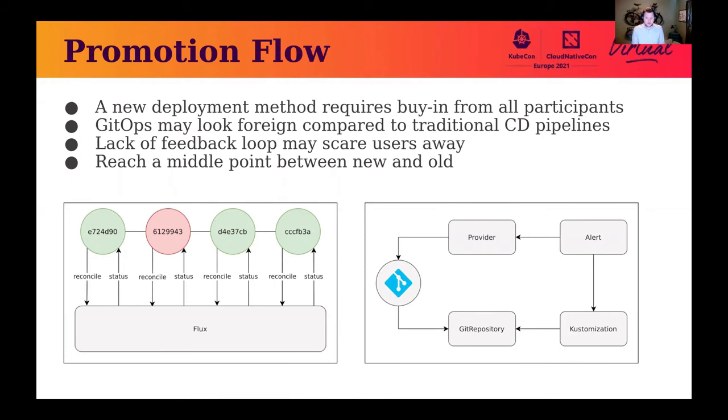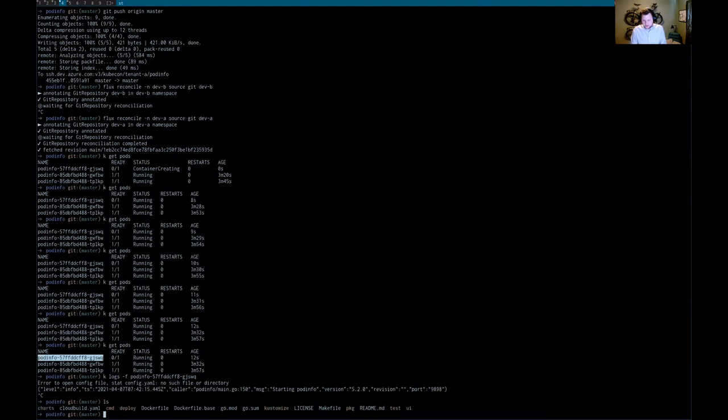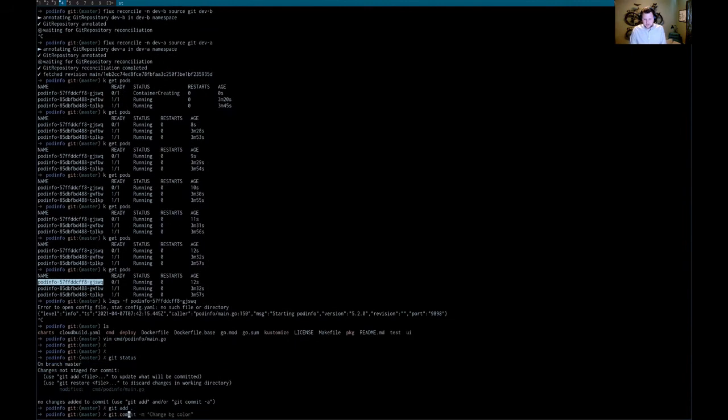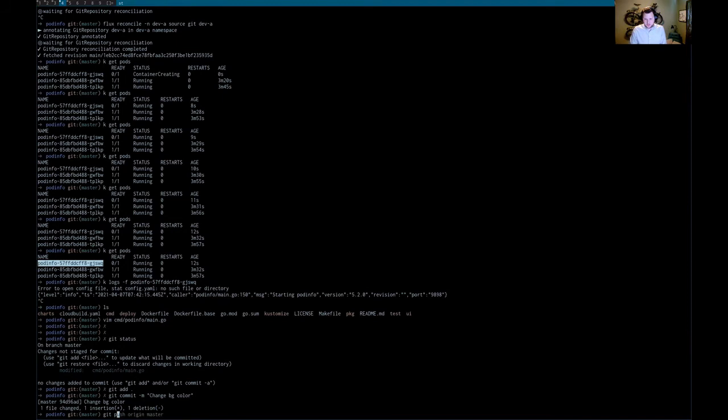In theory, what you can do is you can have a pipeline configuration that after a change to a dev manifest, it could take that change, create a PR to the QA manifest, and wait for the dev chain commit to have a successful status posted back. We can actually demo this now. If we go here, what I've hit here is the podinfo application that I've forked. If we jump into the code quickly, we can change the color of the background. There we go, add this change, change background color, push the code. This will trigger a CI pipeline that's going to build a Docker image, and then it will trigger a promotion flow.